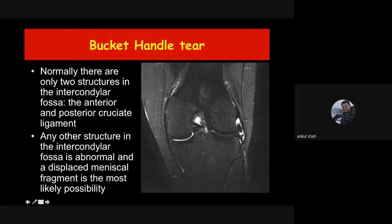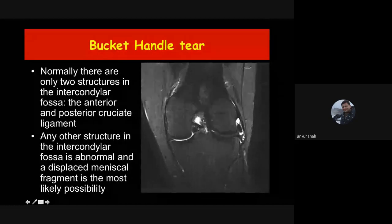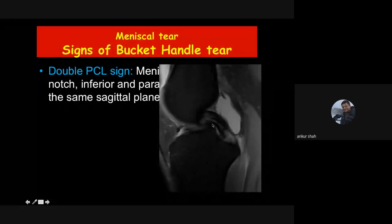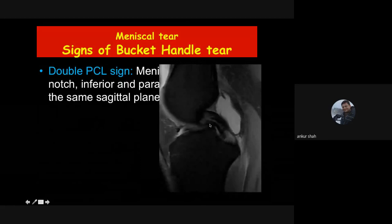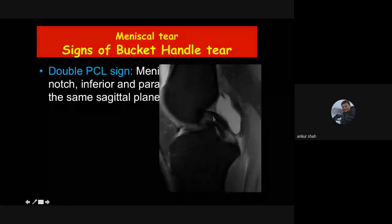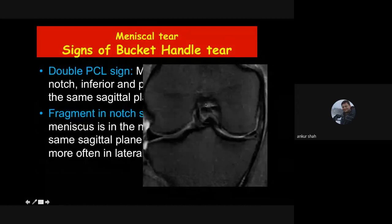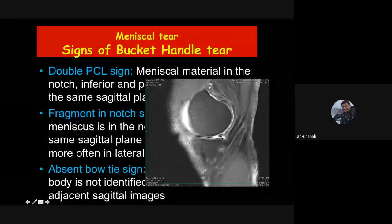Normally in the intercondylar region you see only two structures: the anterior cruciate and posterior cruciate ligament. When you see an additional structure there, always think about the bucket handle tear. Signs described for bucket handle tear include: double PCL sign (the displaced fragment mimics the posterior cruciate ligament, appearing like two PCLs), fragment in notch sign (extra fragment in the intercondylar notch apart from ACL and PCL), and absent bow tie sign (normal bow tie appearance of the meniscus is lost because the body region tissue is displaced).